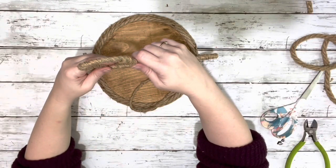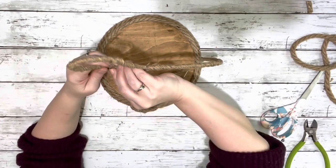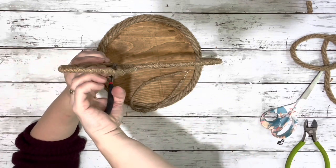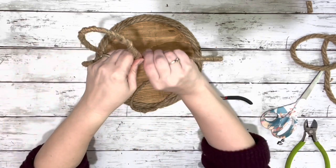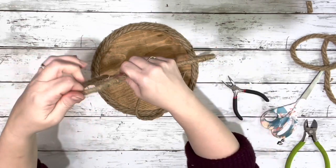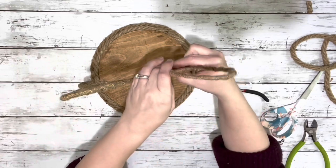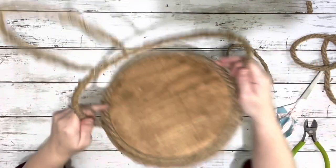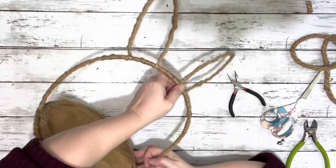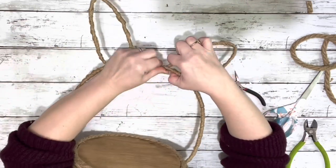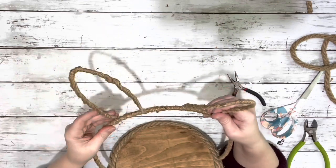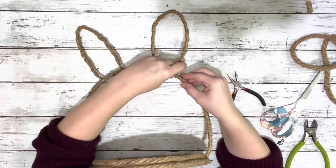Next I took the little bunny ears, and I had purposely left some wire exposed so I could just wrap it around that ring and then use some needle nose pliers to pinch the wire closed. What I did was make sure one of the wires wrapped around the back and then the other one wrapped around the front so it wouldn't flop one way or the other.